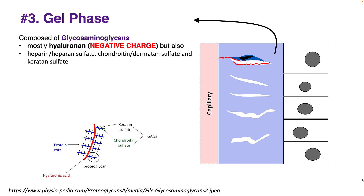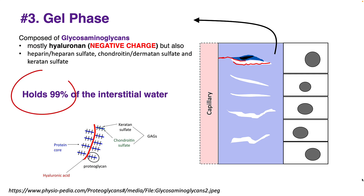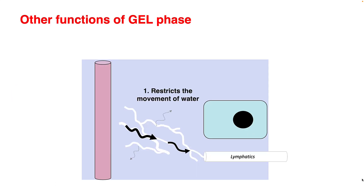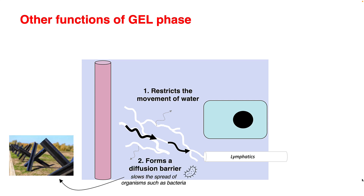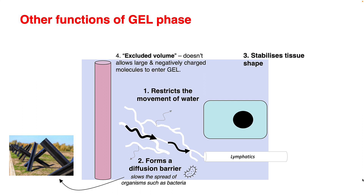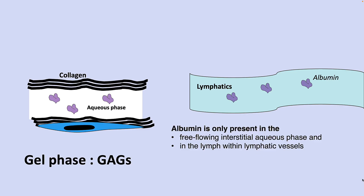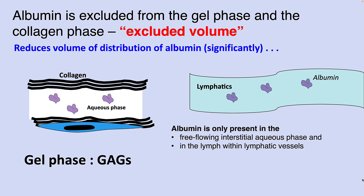The gel phase is made up of glycosaminoglycans — mostly hyaluronan, which is negatively charged — and it has other molecules such as heparin sulfate, dermatan sulfate, and keratan sulfate. This holds 99% of your interstitial water. The gel phase restricts the movement of water, so water flows through aqueous channels but not through the gel phase. It also forms a diffusion barrier to larger molecules and slows the spread of organisms such as bacteria. It stabilizes tissue shape and does not allow large, negatively charged molecules to enter — something we call excluded volume. So albumin, which is large and negatively charged, is present only in the free-flowing interstitial aqueous phase and in lymph within lymphatic vessels; it is completely absent from the gel phase.